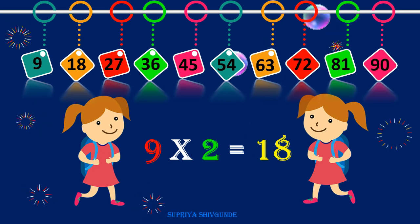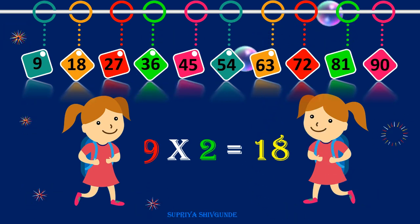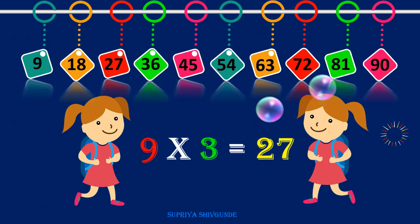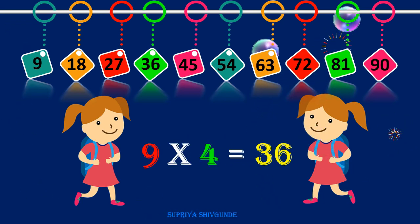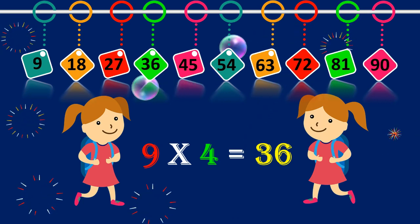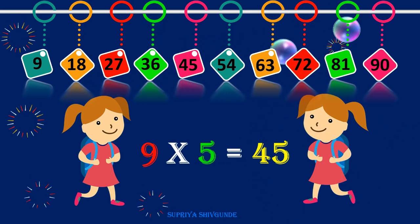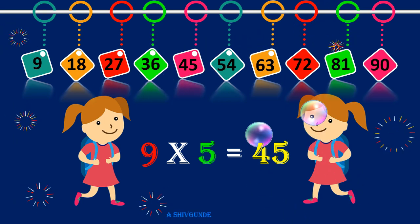Nine twos are eighteen. Nine threes are twenty-seven. Nine fours are thirty-six. Nine fives are forty-five.